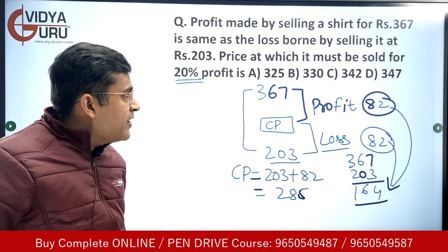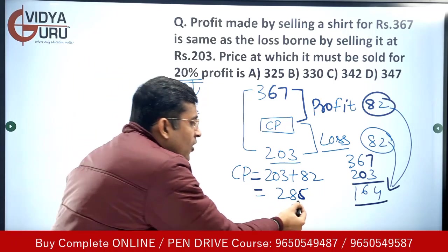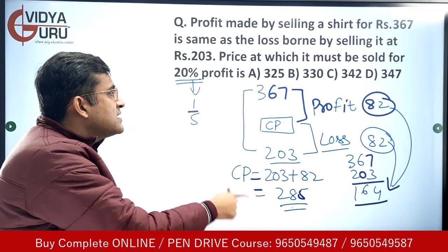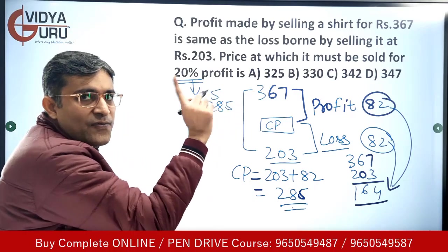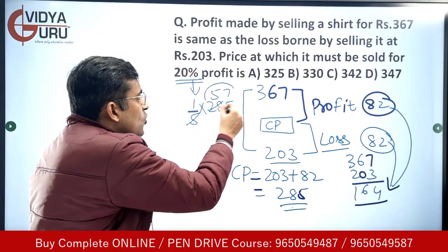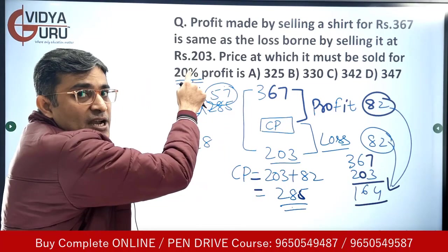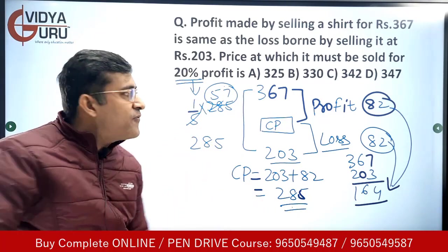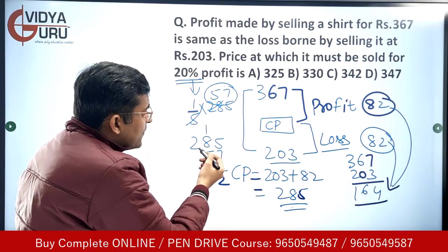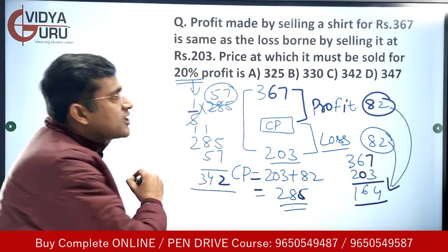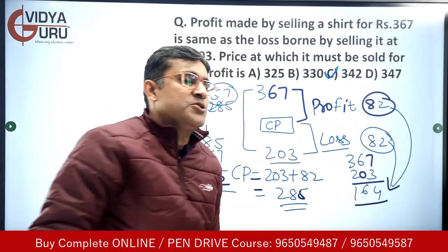Now we have to find the selling price when we make 20 percent profit. 20 percent in fractional terms is 1 by 5. A profit of 1 by 5 of 285 is 57 rupees. So the selling price is cost price 285 plus profit 57, which equals 342 rupees. The answer is option C.